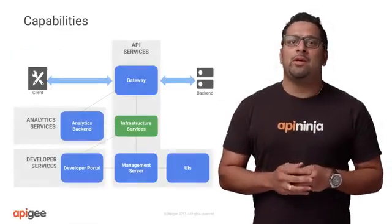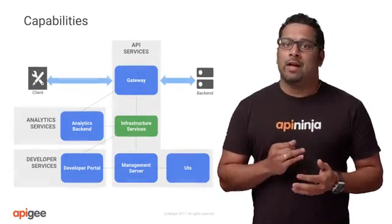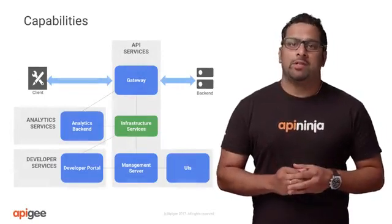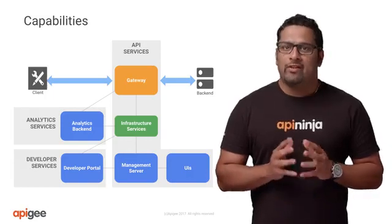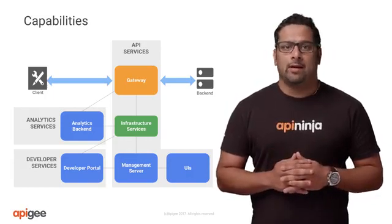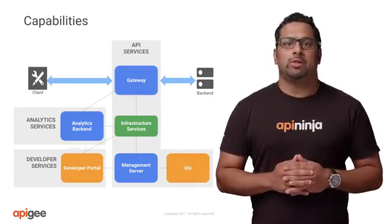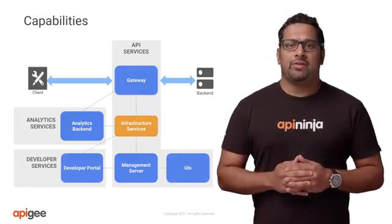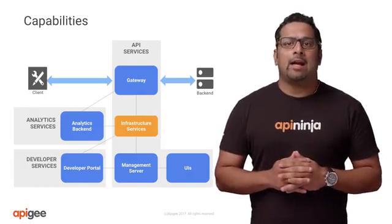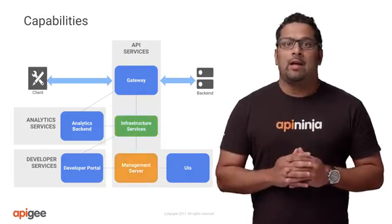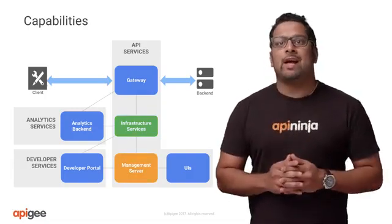Apigee Edge platform has three major capability services: API services, analytic services, and developer services. Within these services, we have the gateway, which mainly routes and processes the API; UIs for the enterprise admin and the developer portals; infrastructure services, which handles the persistence of runtime and analytics data; and the management server that provides APIs for all configurations and management activities.